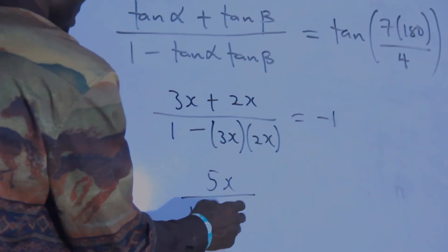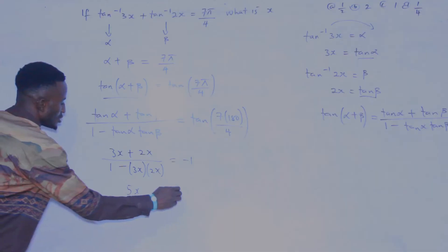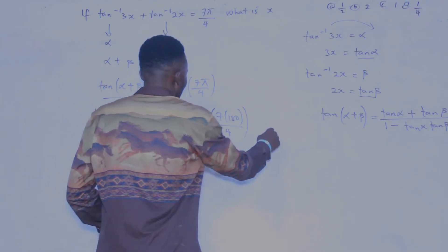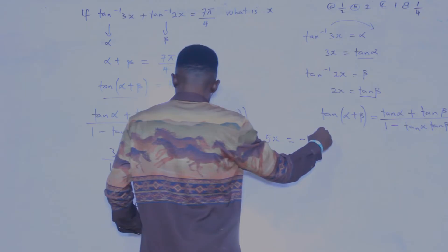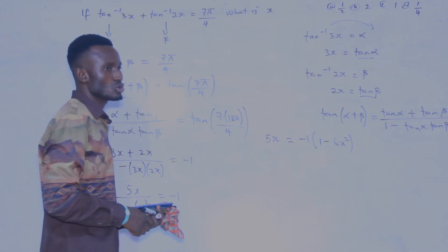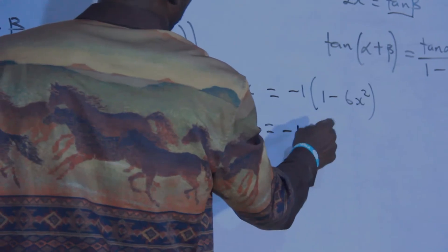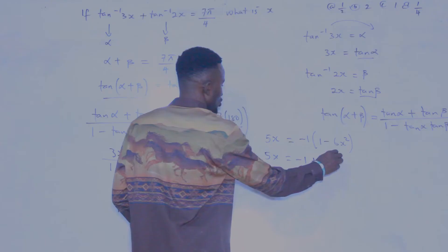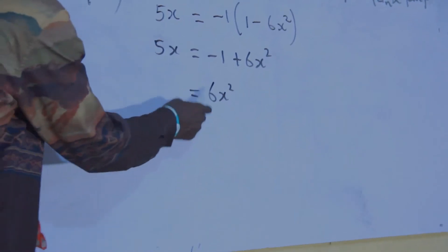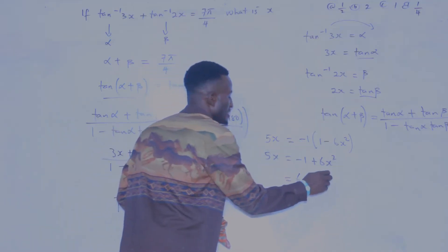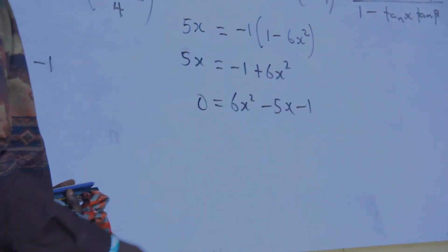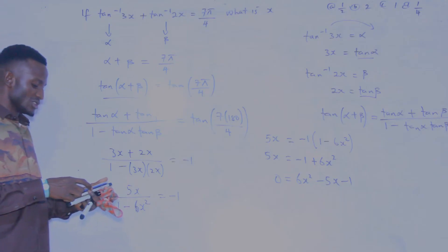We now have the numerator to be 3x plus 2x, that's 5x, over one minus — if you multiply — 6x squared, everything equals minus one. If we cross multiply, we have 5x equals minus one times bracket one minus 6x squared. Opening the bracket: 5x equals minus one plus 6x squared. You can already see this has turned into a quadratic equation. Taking 5x to the other side gives minus 5x, so we have 6x squared minus 5x minus one equals zero.